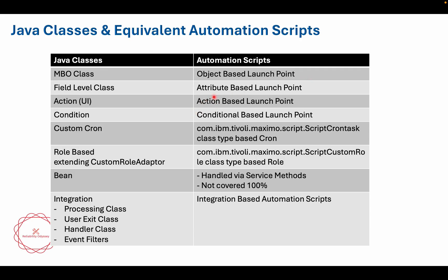You can also write bean class logic in action-based launch points, but one important thing is that in automation scripts you need to use service methods. With version 7.6 and later in Maximo, support for service methods has been increased, but we are still not at a point where all bean class customizations can be done with automation scripts — though most of them are now available. For integration, there are no longer four separate classes; in automation scripts you open a much bigger dialog and can create integration-based automation scripts.